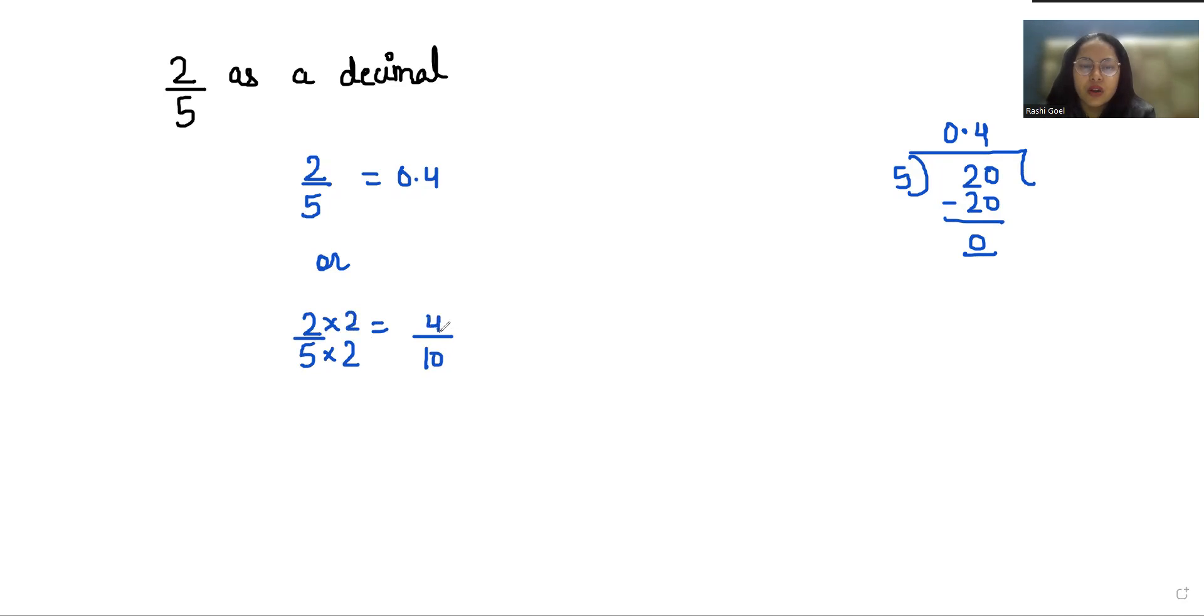So this gives us 4 by 10. Now we have to put decimal depending on number of zeros in denominator. So there is one zero in denominator, so we'll put decimal before one place, so that is 0.4. I hope it's